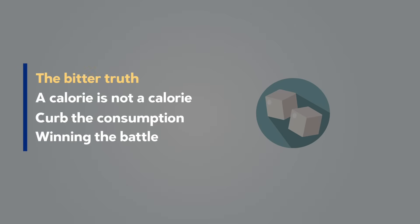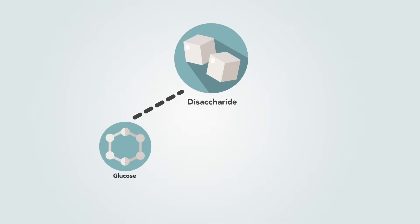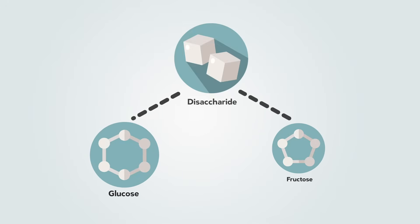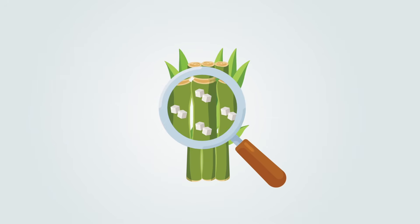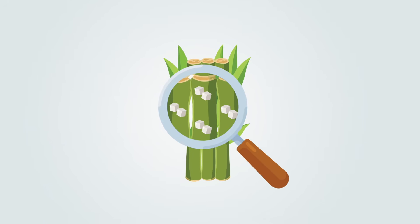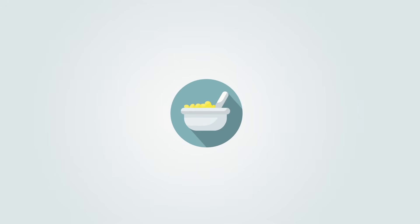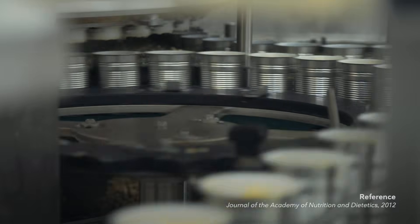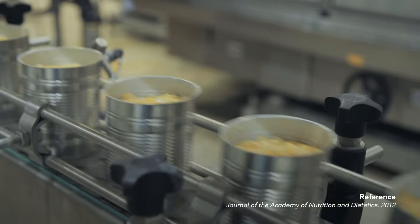To understand sugar, we need to delve into the molecular level. Table sugar is a disaccharide consisting of one glucose molecule and one fructose molecule — that's 50% glucose and 50% fructose. Sugar is a naturally occurring carbohydrate, but in recent decades it has been crucial to processed foods like breakfast cereals, canned foods, and sweetened beverages. In fact, as much as 74% of packaged foods available are loaded with added sugar.